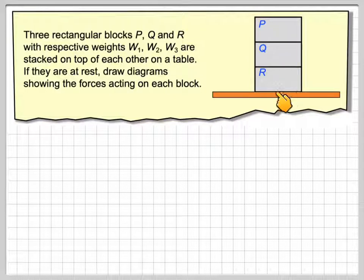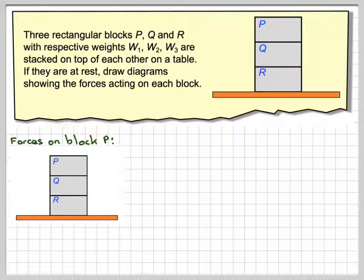So here we've got three blocks stacked on a table. We're going to first consider the forces acting on block P. There will be the weight of block P, which is W1, acting downwards, and then there will be a reaction between P and Q, which will be upwards. So this will be R1.